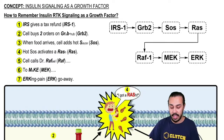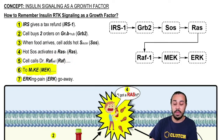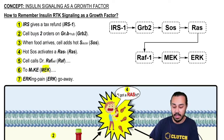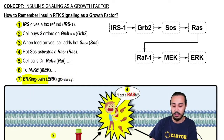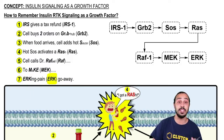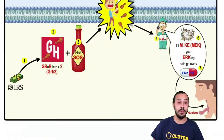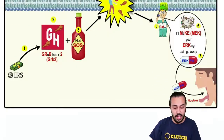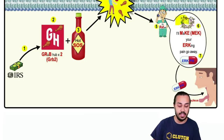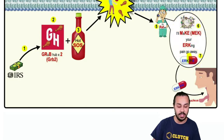That leads us to step 6. Dr. RAF says he's going to make — and "making" something represents the MAPKKK MEK — he's going to make the irking pain go away. The "irking pain" represents the MAPK ERK. In the image, Dr. RAF tells the cell that he's going to make the irking pain go away.